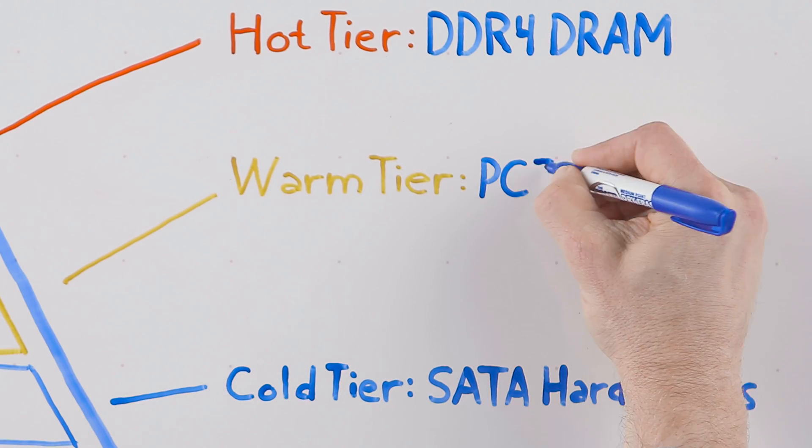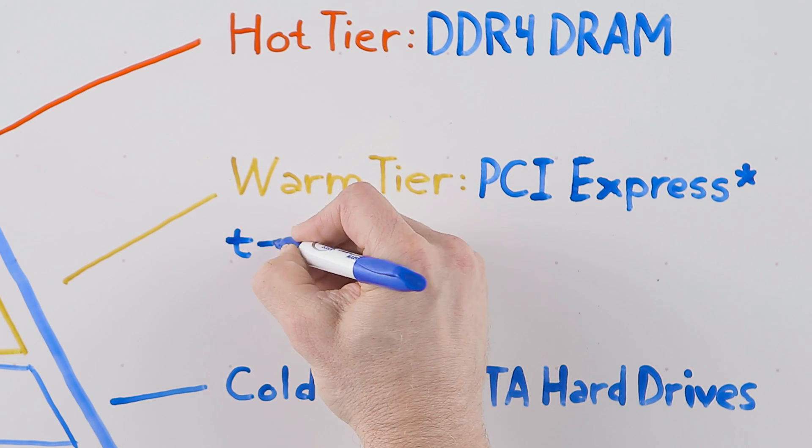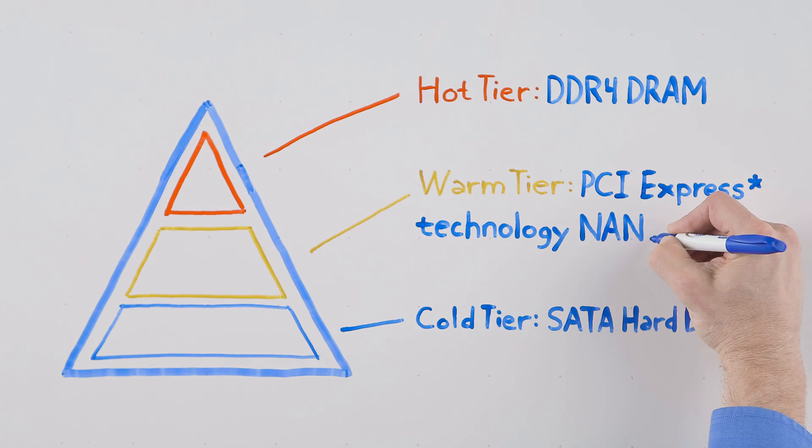The warm tier, which is faster than cold but cheaper than hot, is made up of SSDs built out of NAND technology.